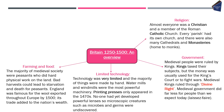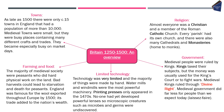The majority of medieval society were peasants who did hard physical work on the land. Bad harvests could lead to starvation and death, which was quite common. England was famous for the wool it exported throughout Europe by 1500. As late as 1500, there were only approximately 15 towns in England with a population of more than 10,000. Medieval towns were small but busy, containing many different crafts and trades, especially busy on market days — where disease would spread very quickly.